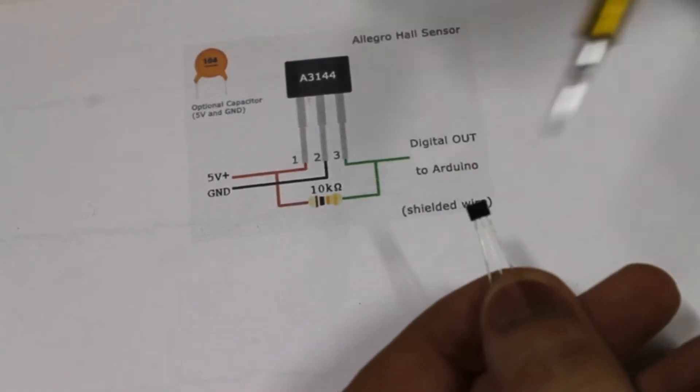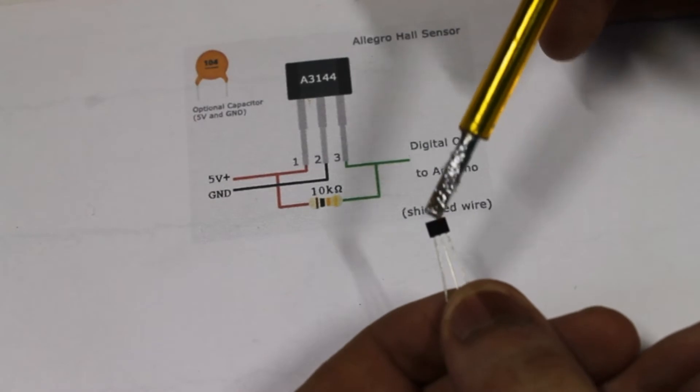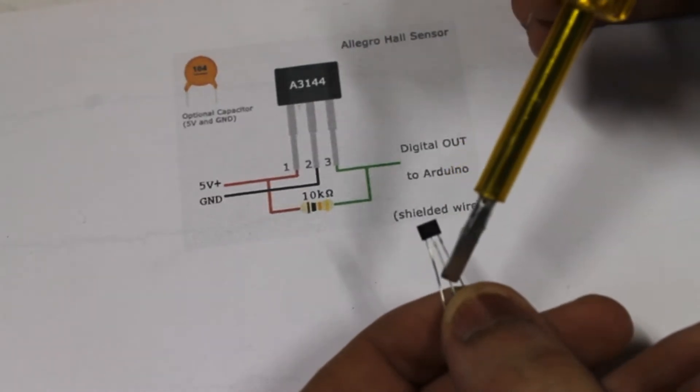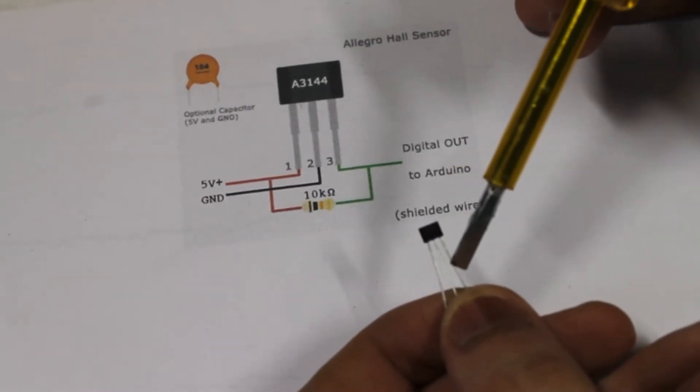The pinout of the 3144 sensor is something like this. Pin one is 5 volts, the second pin is the ground, and the third pin is the digital output.